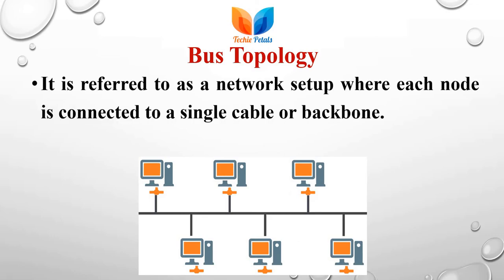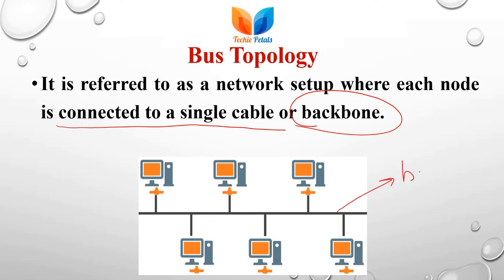Next we have bus topology, where each node is connected to a single cable, also called the backbone cable. Here all devices are connected to and dependent on this backbone cable. If this backbone cable goes down, the network is also down — the connection won't happen if anything happens with this cable.